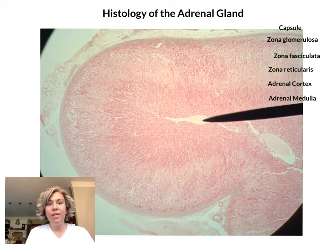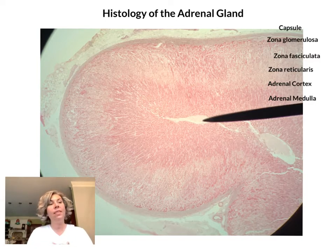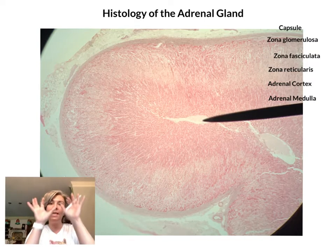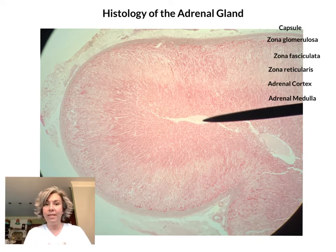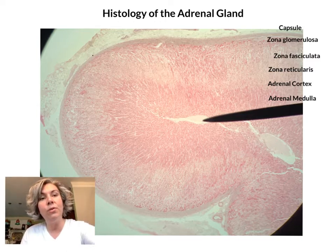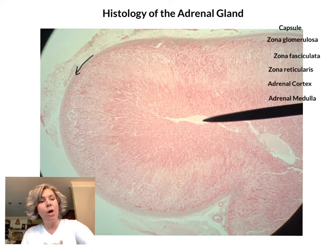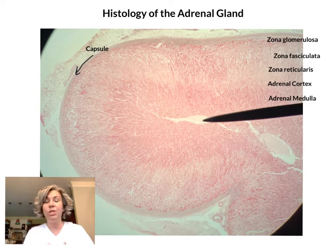We are going to examine the histology of the adrenal gland. The adrenal gland is a paired set of glands that reside just superior to the kidneys, and they are made of two main regions. The outer area is known as the adrenal cortex and the central region is known as the adrenal medulla. The entire gland has a covering of connective tissue around it known as the capsule. In this microscopic image, we can see the capsule on the outer edge — that light pink covering encircling the entire gland — which is fibrous connective tissue that supports and surrounds the adrenal gland.